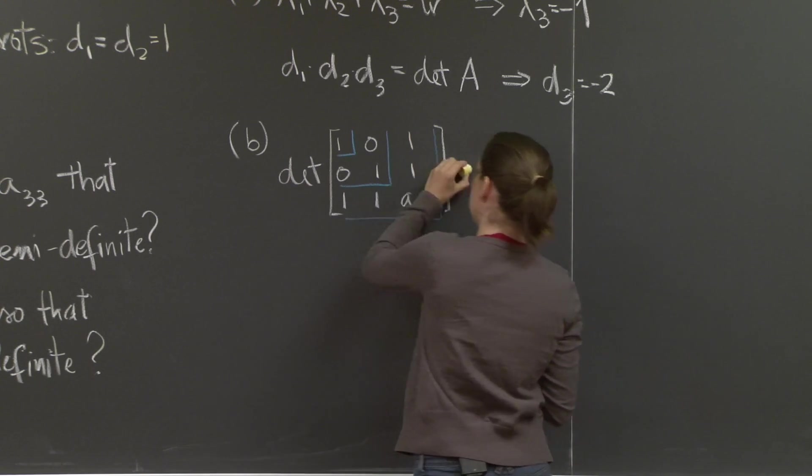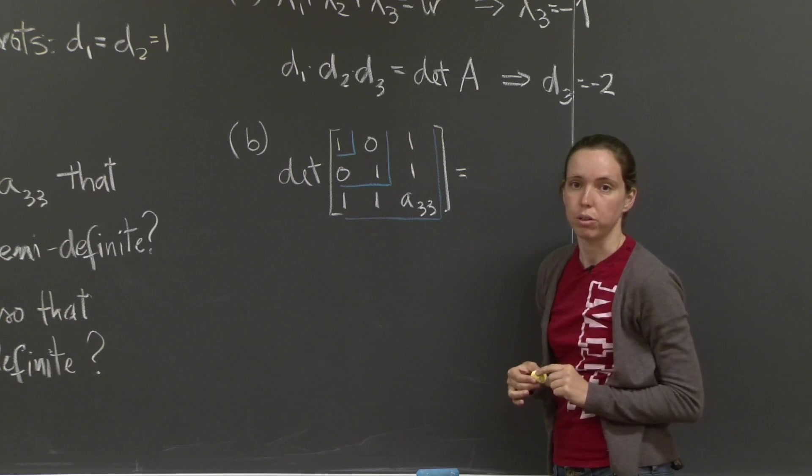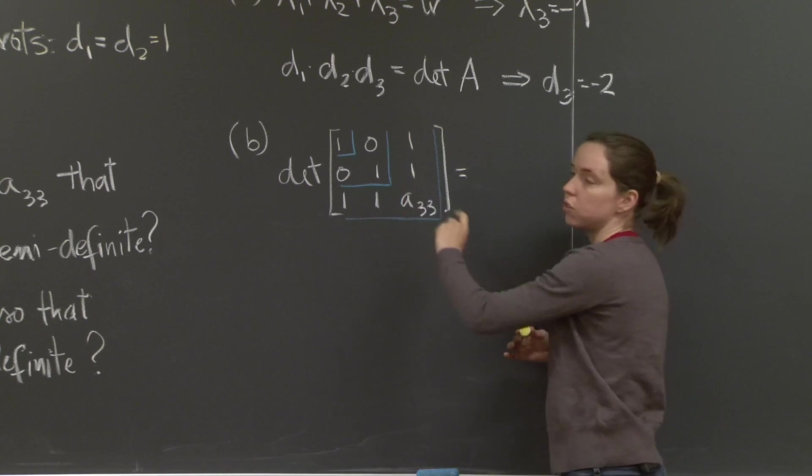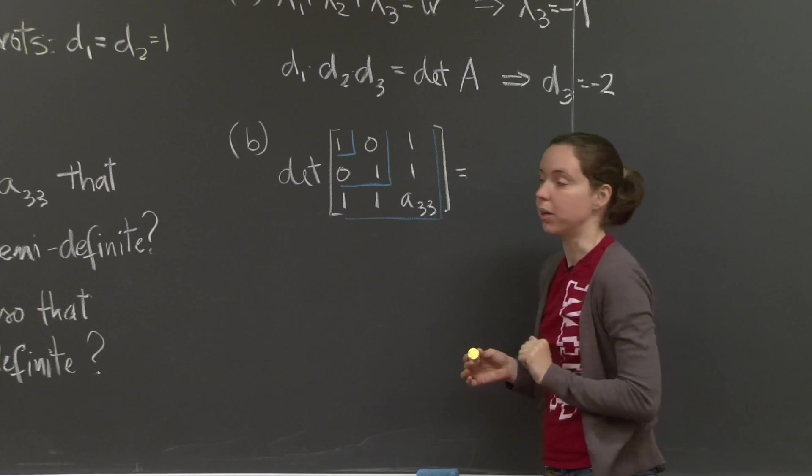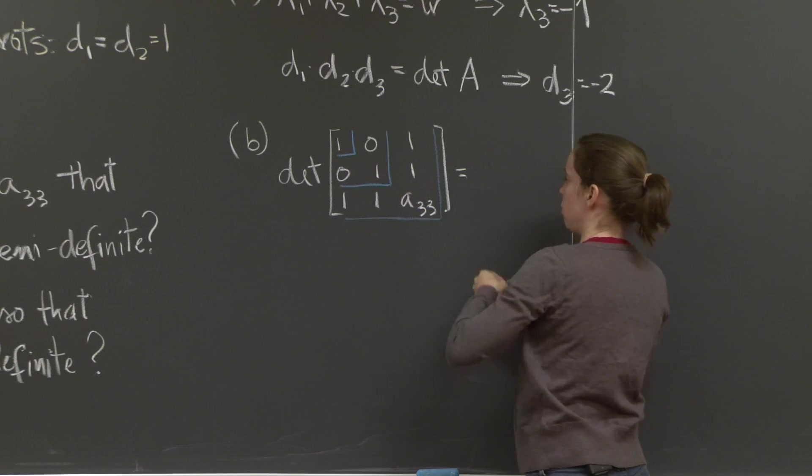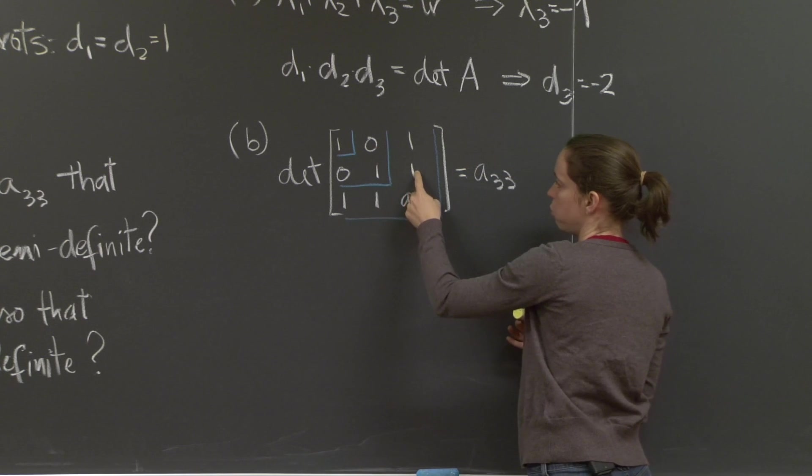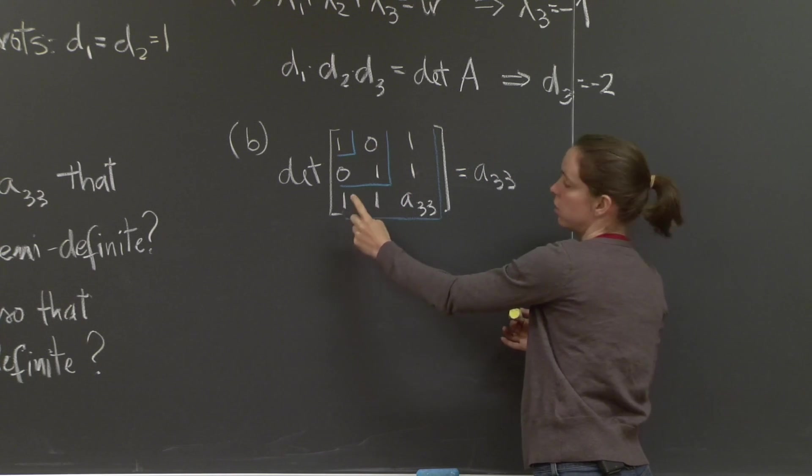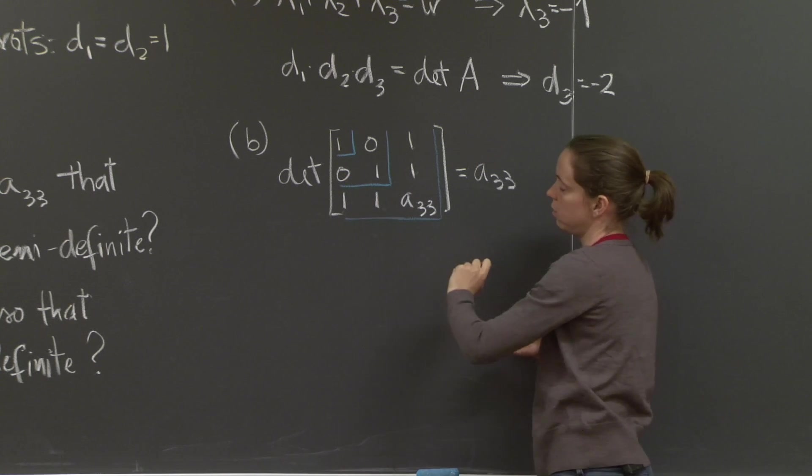So what is the determinant of this matrix? It is equal to, it's a 3 by 3 matrix, so do you know how to do it quickly? There's this way that only works for 3 by 3 and not for bigger, which is, the determinant will be 1 times 1 times a3,3 plus 0 times 1 times 1, that's 0, plus 1 times 0 times 1, that's 0 again,